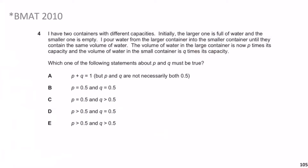Since this asks what 'must be true' for any scenario, we can make up a specific example and test it. Let the large container hold 6 litres and the small one hold 4 litres. The large starts full with 6 litres. We pour until both have the same amount — 3 litres each.